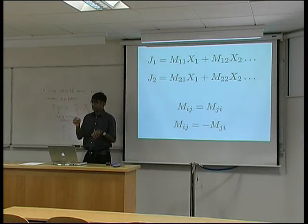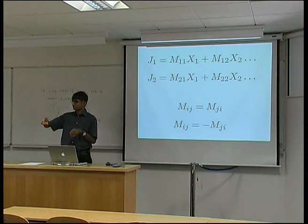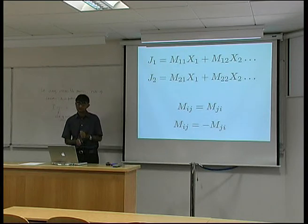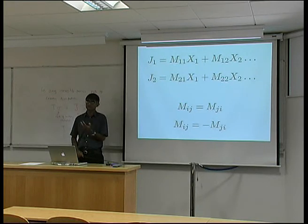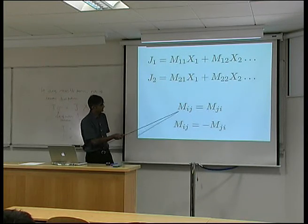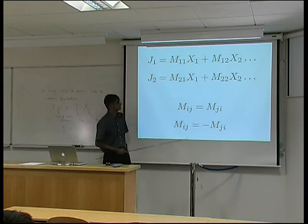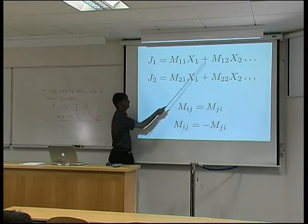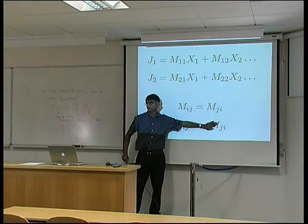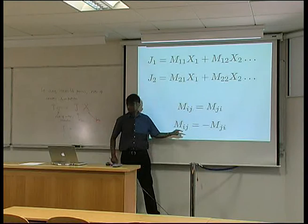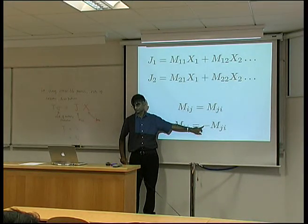If we think about what happens microscopically, forward and reverse processes should occur at the same rate. This is the principle of microscopic reversibility, which tells us that Mᵢⱼ = Mⱼᵢ — the interaction coefficients are symmetric. So, for example, M₁₂ equals M₂₁. There is one exception: when magnetic fields are present, reversing the direction of the magnetic field requires changing the sign of the coefficient.